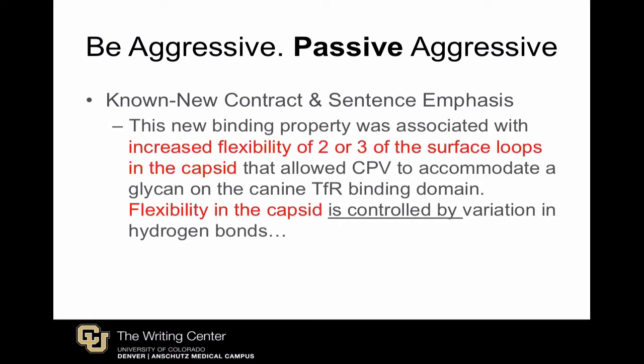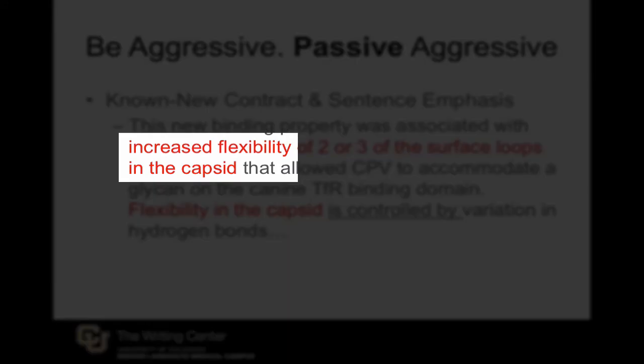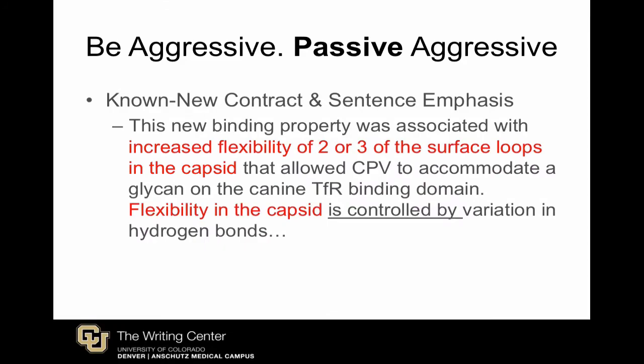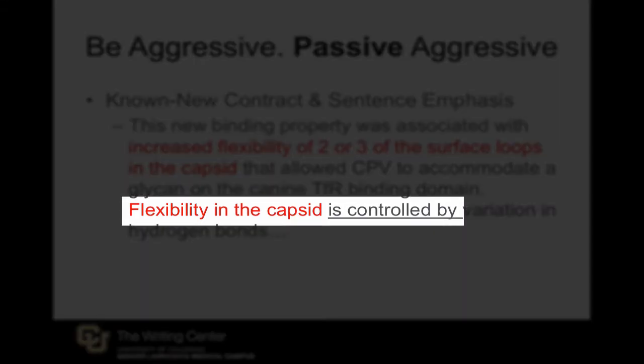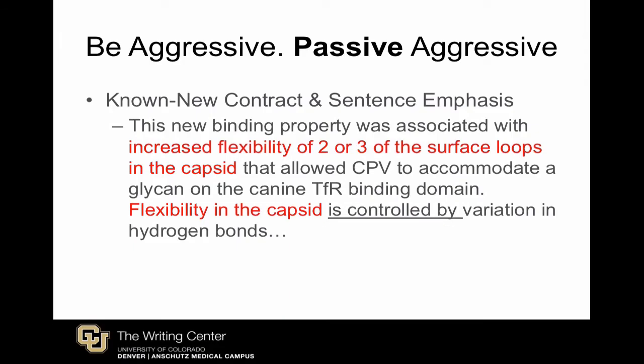Here's another example. After establishing the idea of capsid flexibility in the first sentence, if the writer wants to maintain this focus, he or she begins the following sentence with 'flexibility in the capsid is controlled by.' Yes, we could easily make this second sentence active by switching the subject to 'variation in hydrogen bonds' and the verb to 'controls,' but that changes the focus of the sentence and interrupts cohesion between sentences.